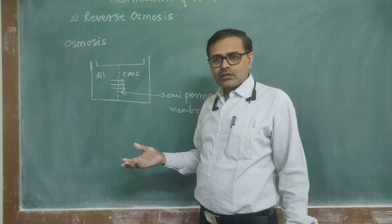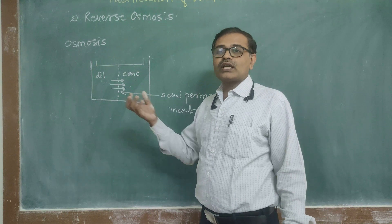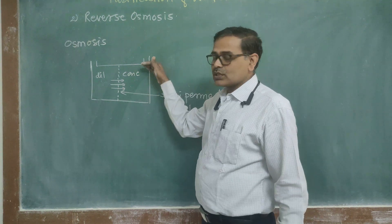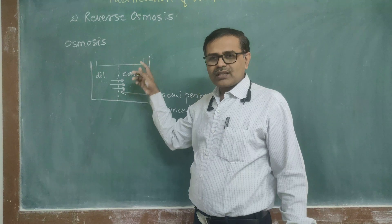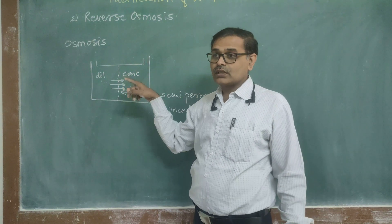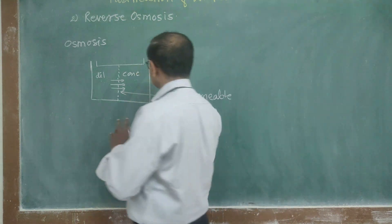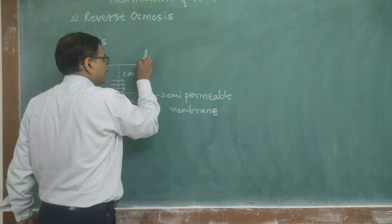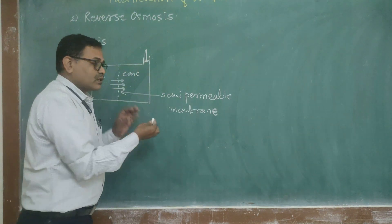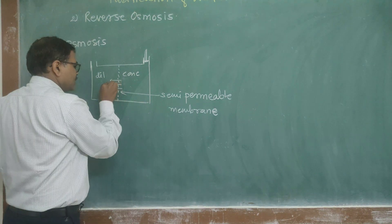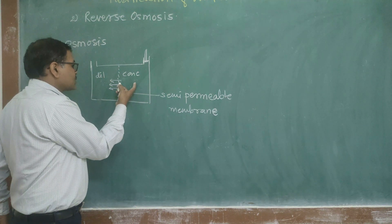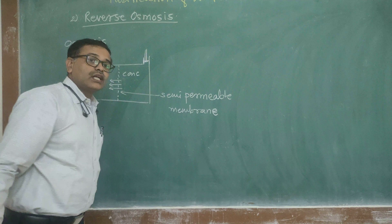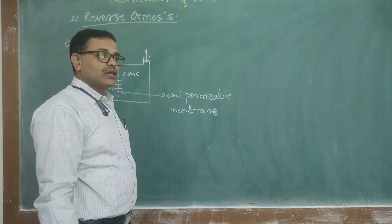However, if we apply more than osmotic pressure from the concentrated side, then can this process be reversed? The answer is yes. If we are applying more pressure from the concentrated side than the osmotic pressure, then this process can be reversed. Then these solvent molecules will go from concentrated solution to dilute solution. This process is called reverse osmosis — the reverse of osmosis.